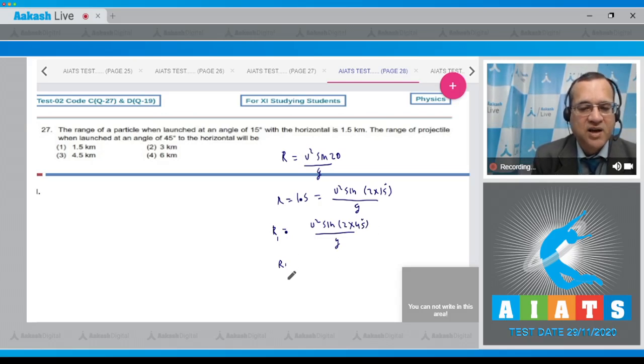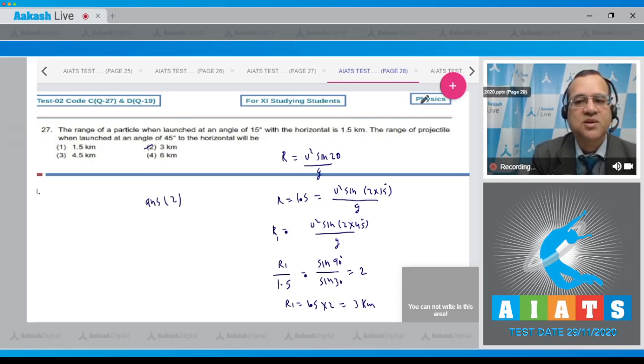It is given that u is same, so if you divide R1 divided by 1.5 kilometers equals sine of 90 degrees divided by sine of 30 degrees, and this is 1 and this is 1 by 2, so it is 2. R1 will be equal to 1.5 multiplied by 2, which equals 3 kilometers. Look at the option - second option is 3 kilometers, so answer is 2.